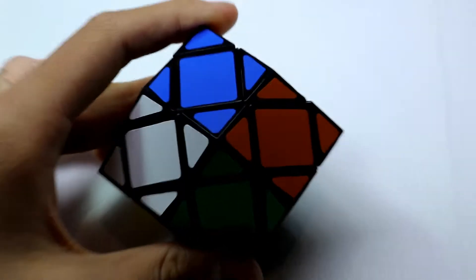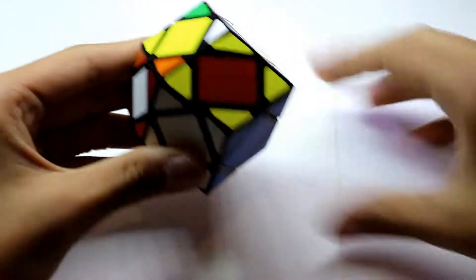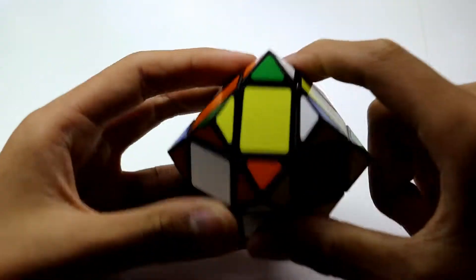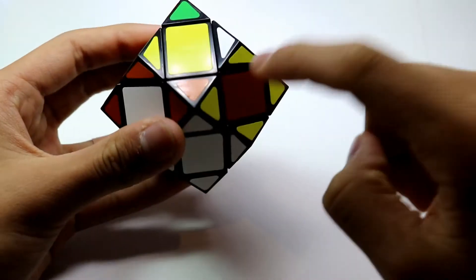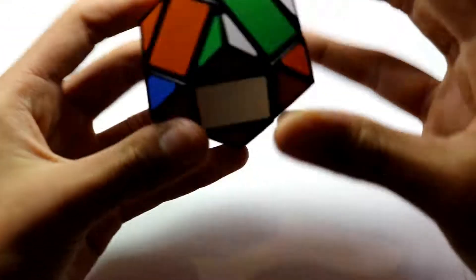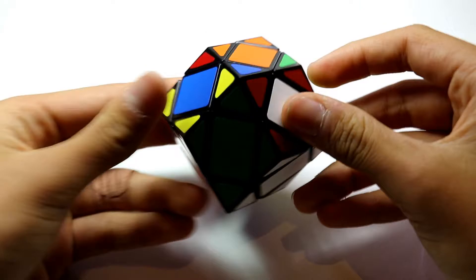So now what we are going to do is we're going to solve these pieces. So just like F2L on the 3x3, we're just going to insert it that way. So first of all, before you solve this, make sure you know how to solve a 3x3.